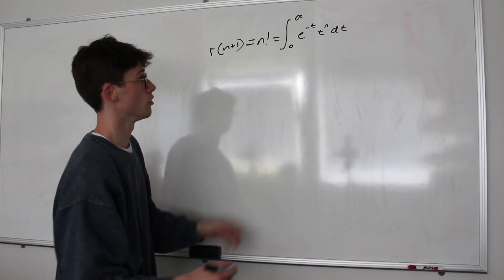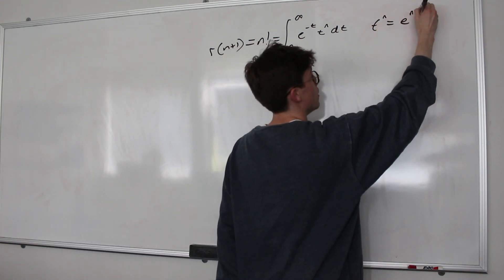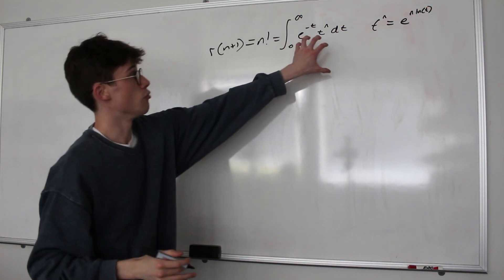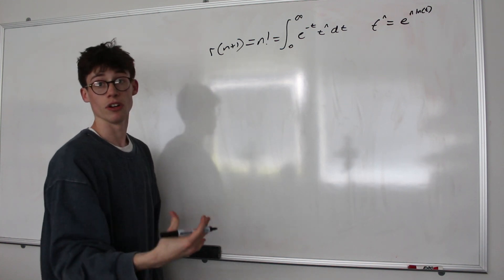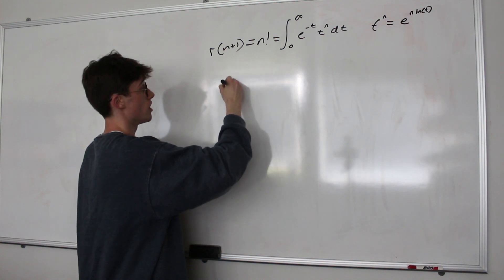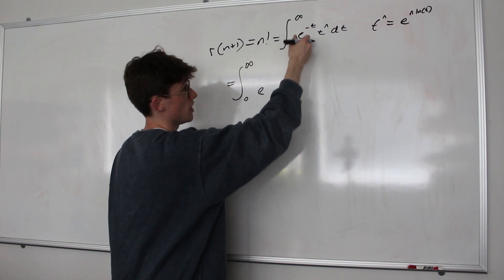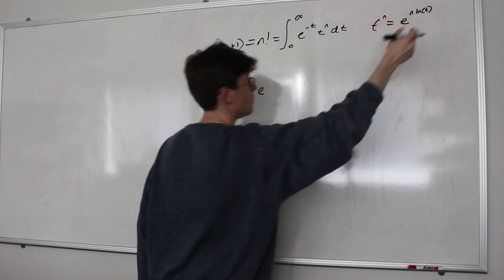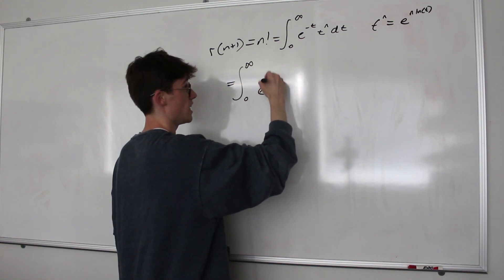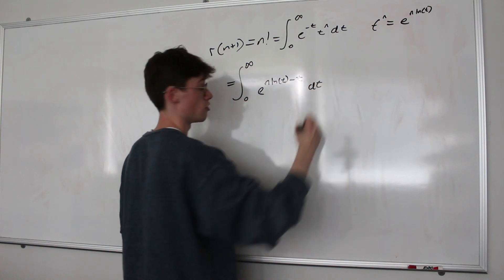Now the first thing that we're going to observe is that t to the n is equal to e to the power of n times the natural log of t. And that means that we can rewrite what we're integrating to be just one function all in terms of an exponent of e. And that's the integral from 0 to infinity of e to the negative t times e to the n ln t, which means of course we're going to be adding because they have the same base. So we're going to be integrating e to the n ln t minus t with respect to t.